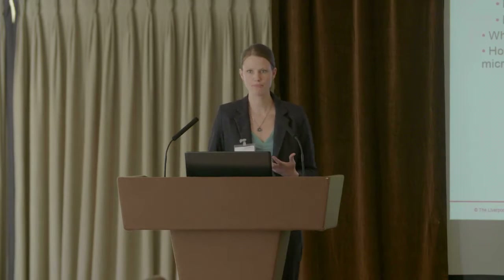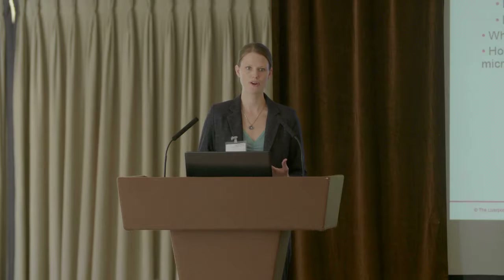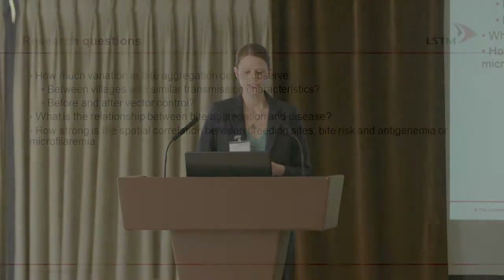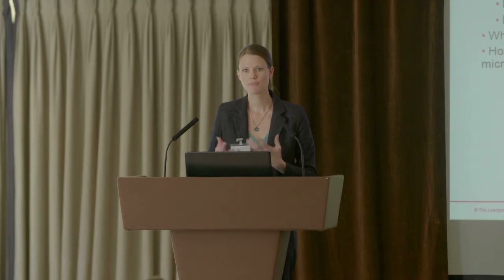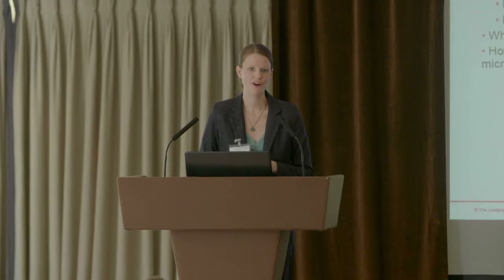Looking at that figure as a vector biologist, there are a number of research questions that immediately jump out. What is K actually, and does it vary between neighboring villages? Because that would have significant impacts on how we implement mass drug administration — we can't do a village-by-village specific program, so this is going to be district-wide. Does that aggregation parameter change surrounding a control program? And are we assuming that aggregated biting is also associated with aggregated disease? Do we see breeding sites close to areas with high biting density, and is that spatially correlated with infection prevalence and intensity?